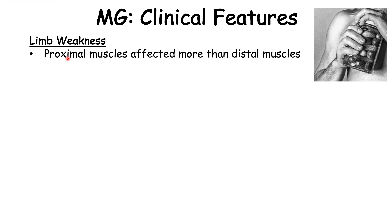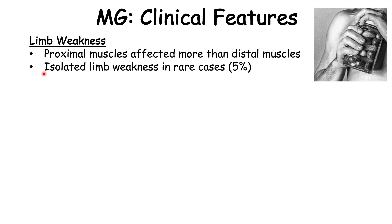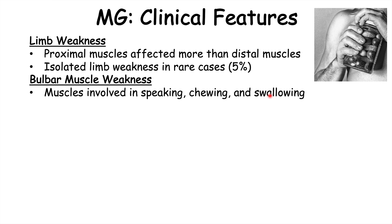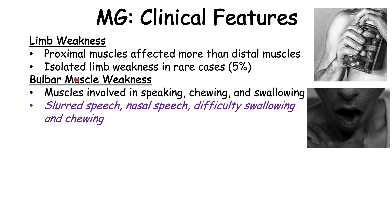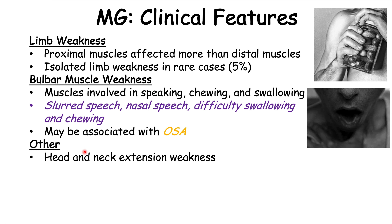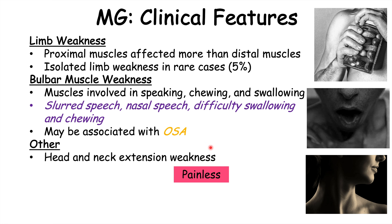As this condition progresses, patients can also have limb weakness. Proximal muscles are affected more than distal muscles, and some patients may have isolated limb weakness, though this accounts for only about 5% of cases. Other patients will have bulbar muscle weakness, where muscles involved in speaking, chewing, and swallowing are affected, leading to slurred speech, nasal speech, difficulty swallowing, and chewing. There is also an association with obstructive sleep apnea. Patients may have head and neck extension weakness as well. All of this muscle weakness is painless and can be very mild initially, but over weeks to months it can become more and more severe.